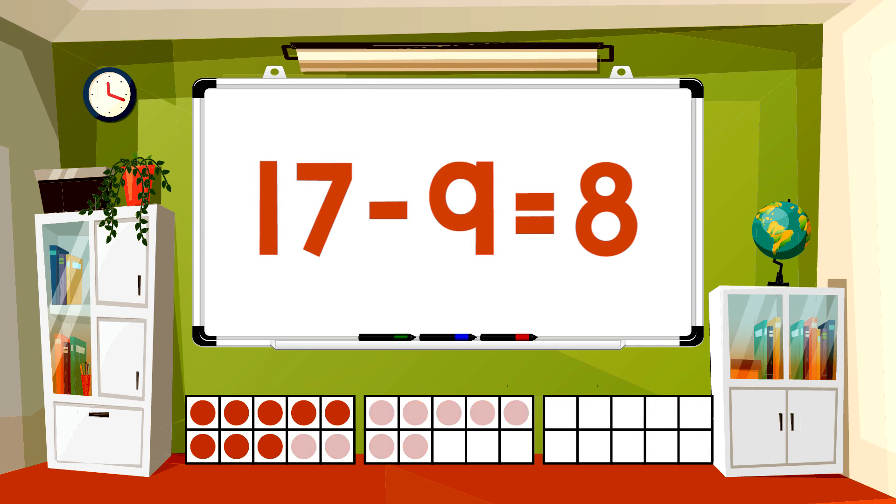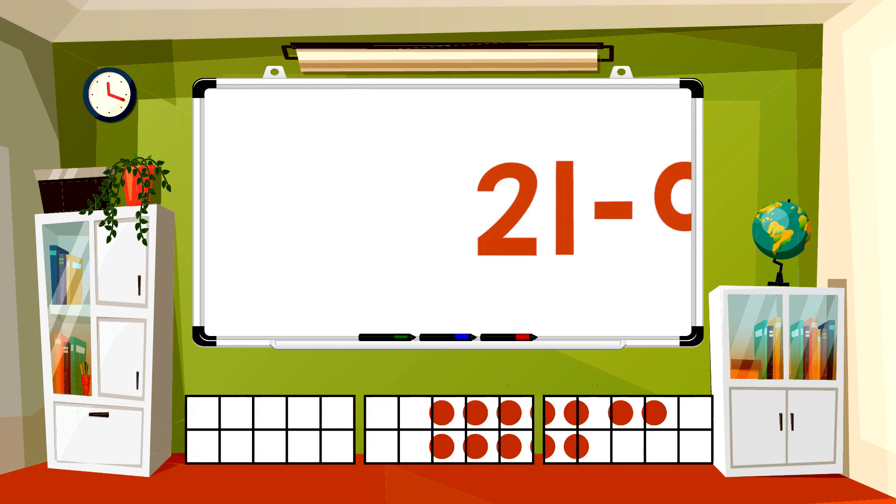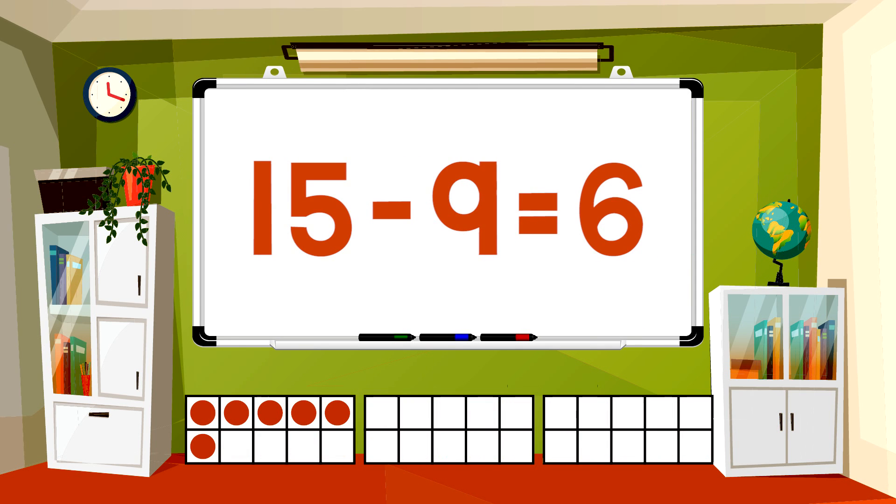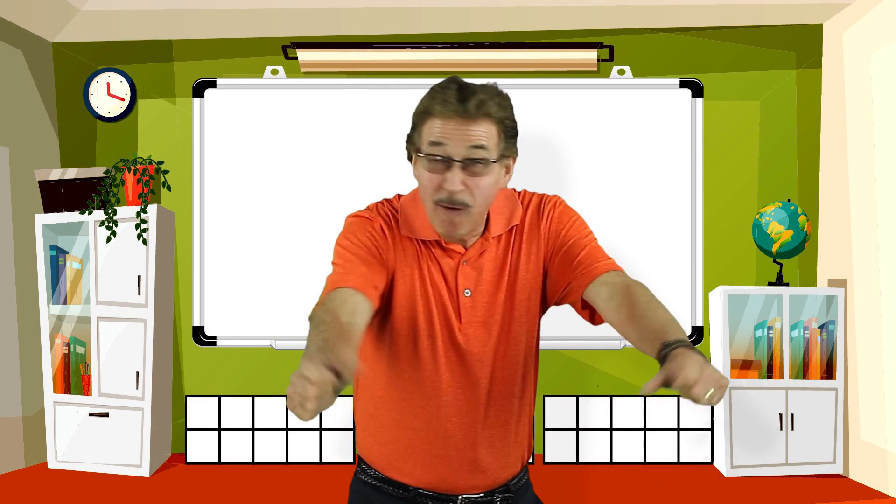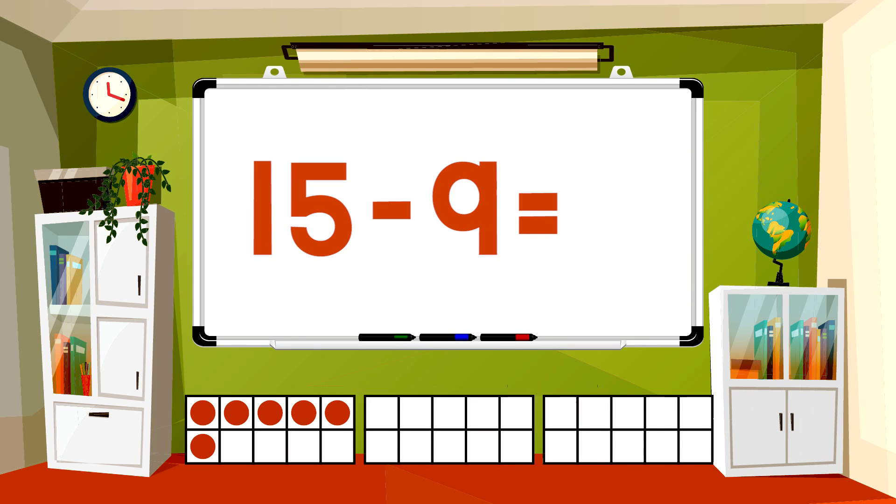17-9 equals 8, 21-9 equals 12, 15-9 equals 6. Now you answer, now you answer before me. 15-9 equals.